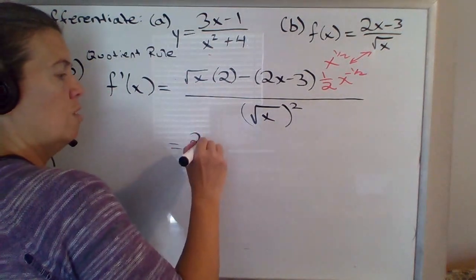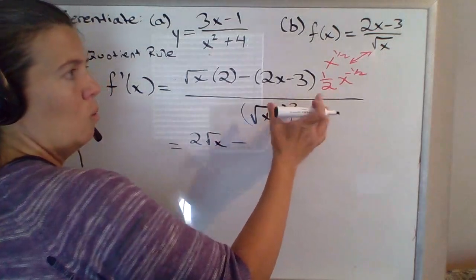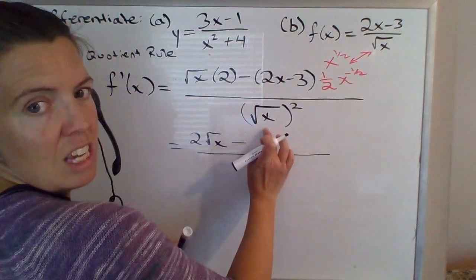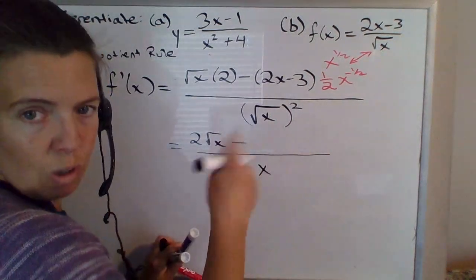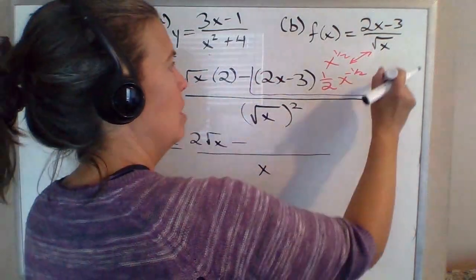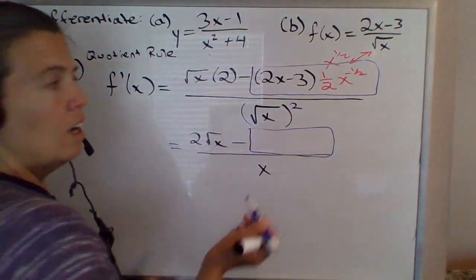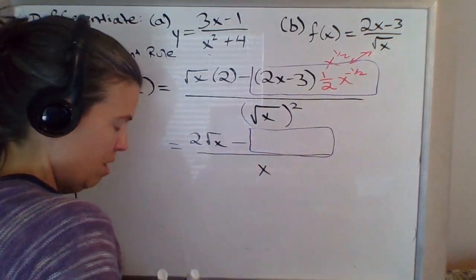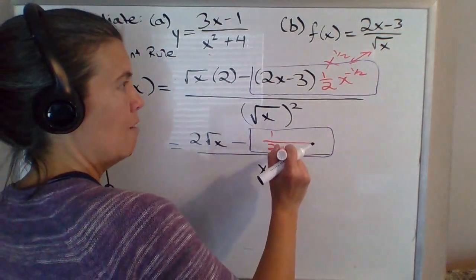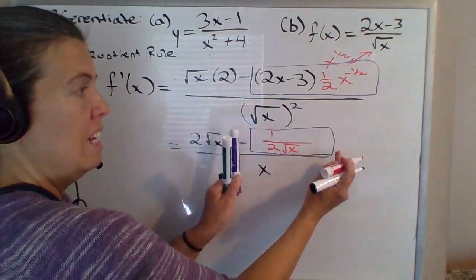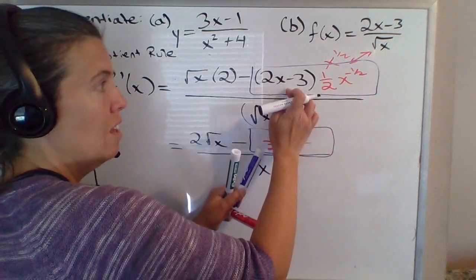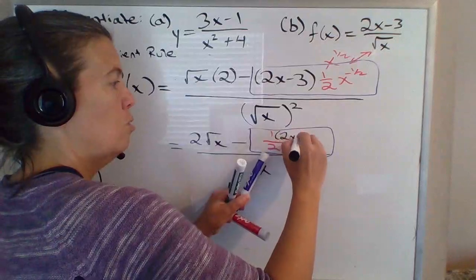So this will be 2 times the square root of x minus — this is a bit messy. That square root of x squared is just x to the first power; when you square a square root, those are inverse operations and you end up with just x. For this chunk, what I would do is write 1 over 2, so 1 half x to the negative 1 half — that's a square root of x in the denominator of just this piece. And then we've got that times 2x minus 3.